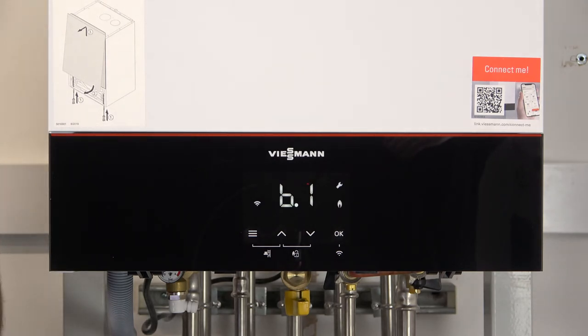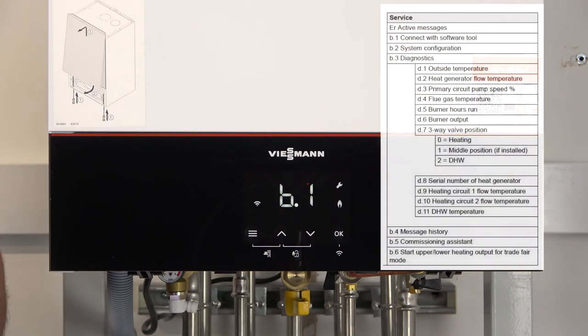You can see there the first code that comes up is B1, and for a full list of all the codes we look at the manufacturing instructions. I will put a screen in shot for you so you can see as we go through this video today what it means when I'm going through the codes. B1 is for connecting with the software tool. That's more for our service engineers when they're on a warranty call to get access into the boiler with their systems.